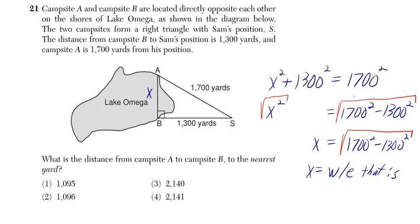Subtracting 1,300 squared, you would just get X squared is equal to 1,700 squared minus 1,300 squared. But then taking the square root of both sides, we'll just give you X is equal to the square root of 1,700 squared minus 1,300 squared.